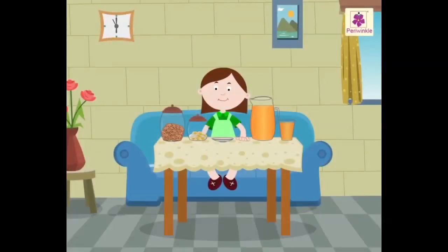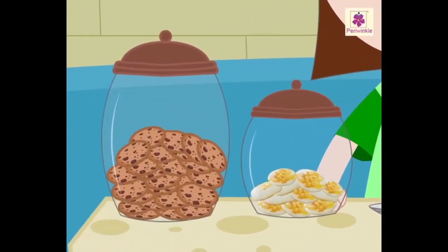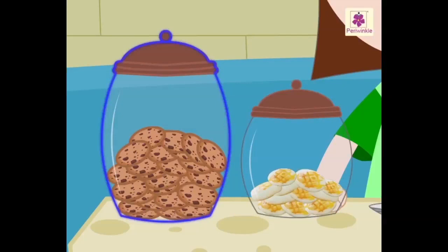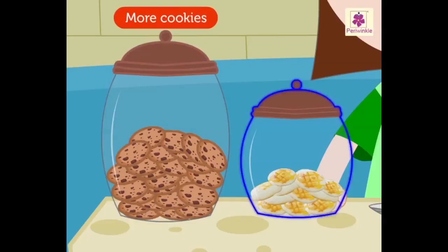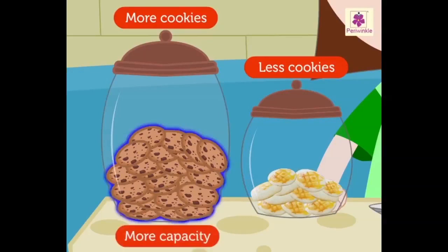Mini wants to have some yummy cookies. There are two jars of cookies on the table — one big jar with chocolate cookies, and one small jar with pineapple cookies. The jar of chocolate cookies is bigger, so it holds more cookies. The jar of pineapple cookies is smaller, so it holds fewer cookies. Thus, we can say that the jar of chocolate cookies has more capacity, and the jar of pineapple cookies has less capacity.